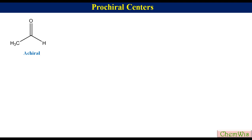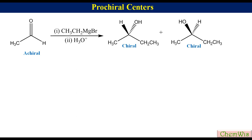A center is said to be Prochiral if it can be converted to a chiral center in a single transformation. Prochiral centers have three different groups. For example, in acetaldehyde, the carbonyl carbon has three different groups: hydrogen, oxygen, and methyl. Reaction of acetaldehyde with ethyl magnesium bromide will give a chiral molecule, so the carbonyl carbon of acetaldehyde is Prochiral.